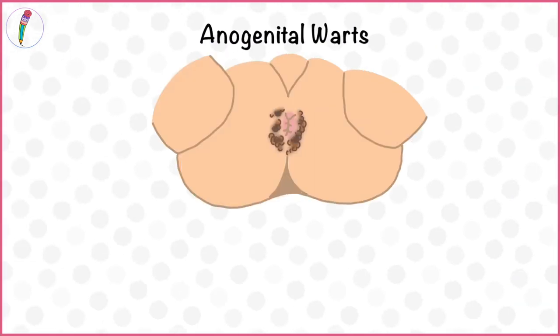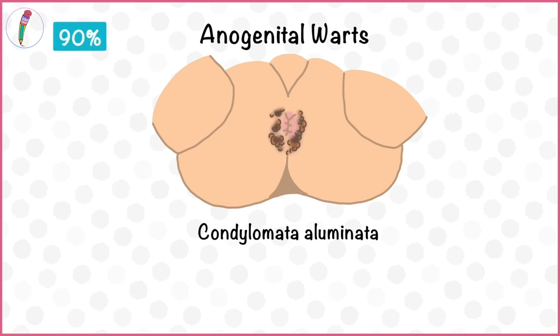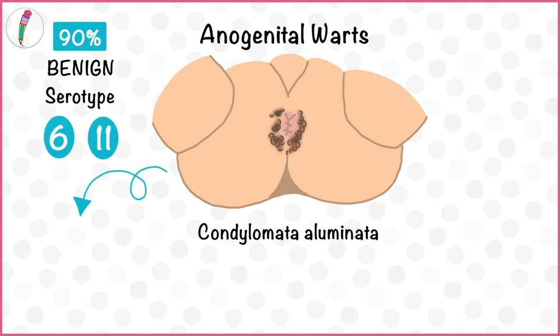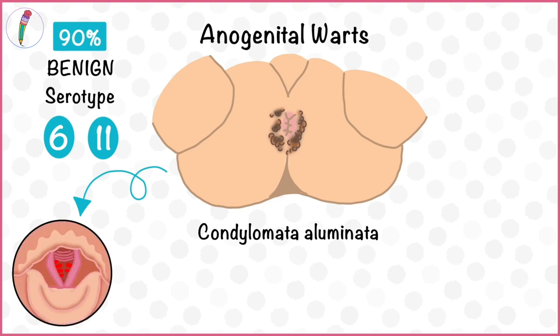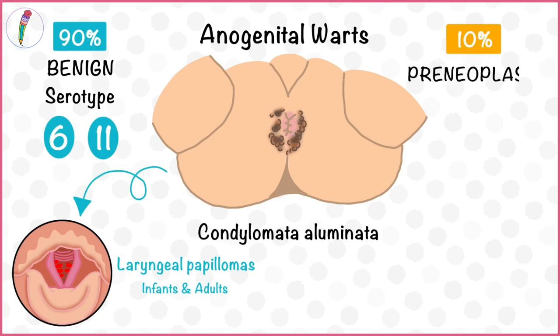Anogenital warts, also called condylomata acuminata, affect the anus and genitals of both males and females. Most of the time these are benign and are caused by serotypes 6 and 11. These serotypes also cause laryngeal papillomas in infants by ingesting fluid during passage through the birth canal, and can affect sexually active adults.